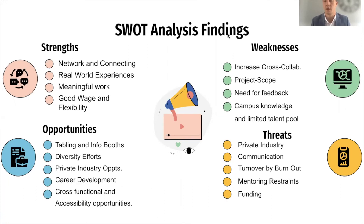Moving to weaknesses: we found that there is a lack of cross-collaboration, and it's something we can work on going forward. Specifically for students joining an ongoing project, project scoping was identified as a weakness — the general understanding of a project for fellows and the broader CAI work population is something we could sharpen. On opportunities: we found that general awareness of the CAI is lacking, and tabling and info boosts would be a great way to increase awareness throughout the entire campus, as well as advancing diversity efforts.